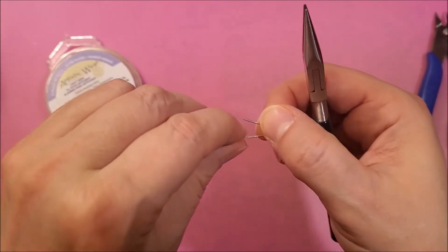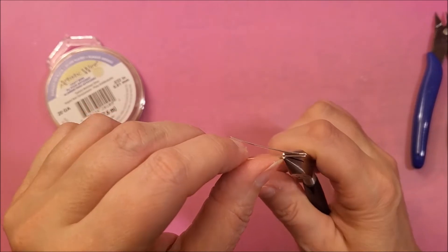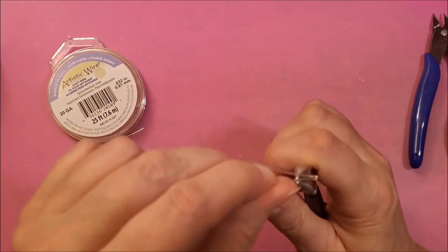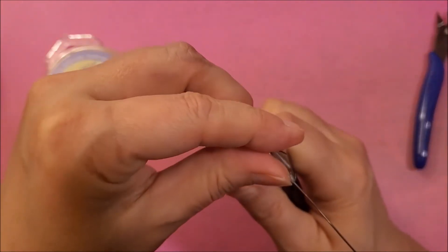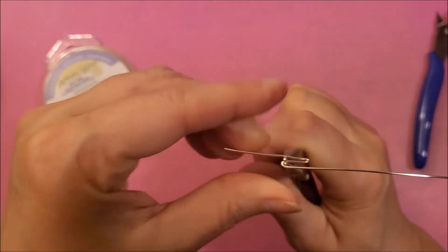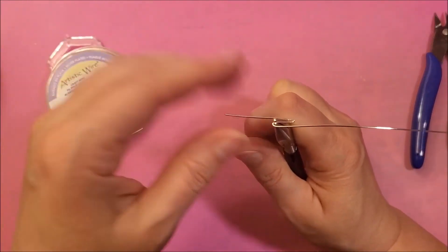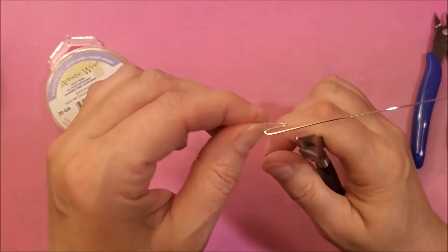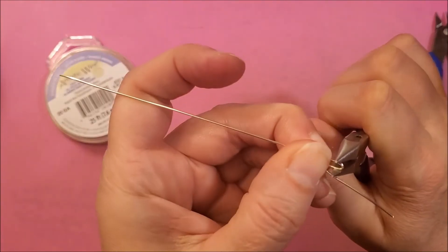Then bend it over and tighten the edge up, squeeze it together. You can open it up for your next step just a little and then you're going to go down about a quarter of an inch and then bend it this way.